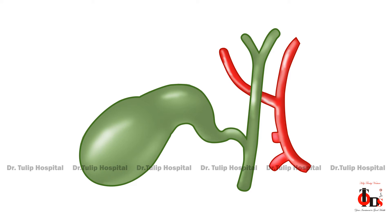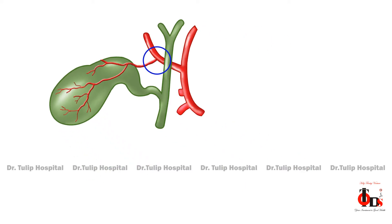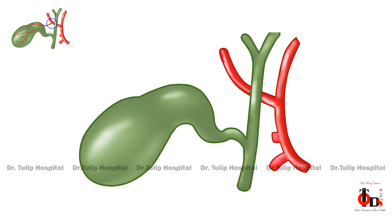The cystic artery normally arises from the right hepatic artery and branches into the anterior and posterior branches close to the gallbladder.